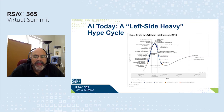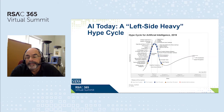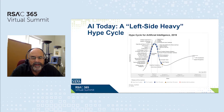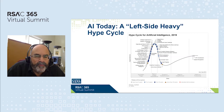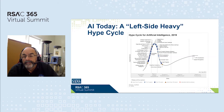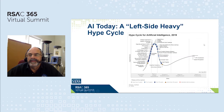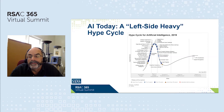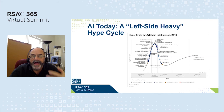Some things get stuck in the trough of disillusionment and go away — remember the Segway, which was going to revolutionize highways and force cars off the road? In most cases, technology does escape that trap and flow out into the plateau of productivity. On the AI hype curve, GPU accelerators for machine learning number crunching are in that plateau of productivity. And speech recognition — with Alexa and medical uses — is now a commonly used technique out in the plateau of productivity.